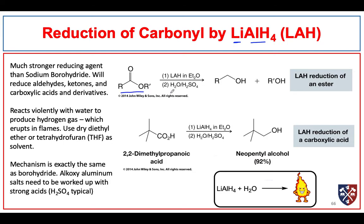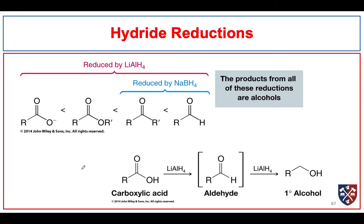Here we see an example of an ester, which can be reduced by lithium aluminum hydride to give a primary alcohol. We can even reduce carboxylic acids to give a primary alcohol. We have to be careful because lithium aluminum hydride reacts violently with water to produce hydrogen gas, and the reaction is so exothermic that the hydrogen gas will ignite. We typically use a dry coordinating solvent, such as diethyl ether or tetrahydrofuran. The mechanism is exactly the same as borohydride, but the alkoxy aluminum salts are a little bit more difficult to solubilize, so we typically have to use more acidic conditions — often a more concentrated sulfuric acid workup.